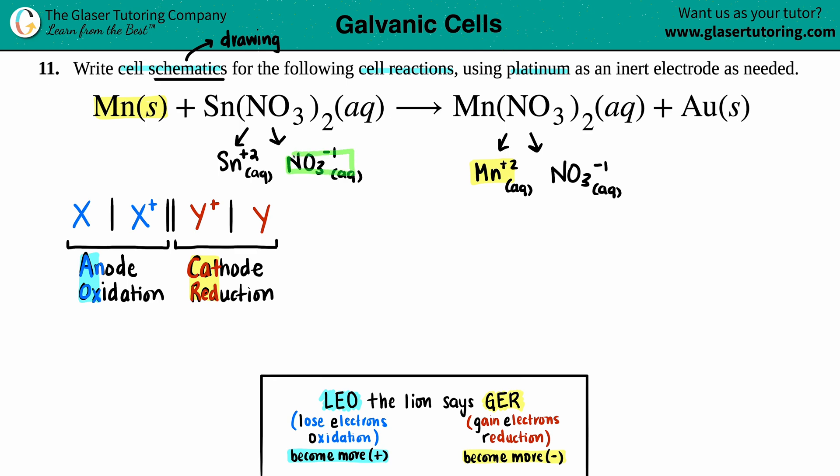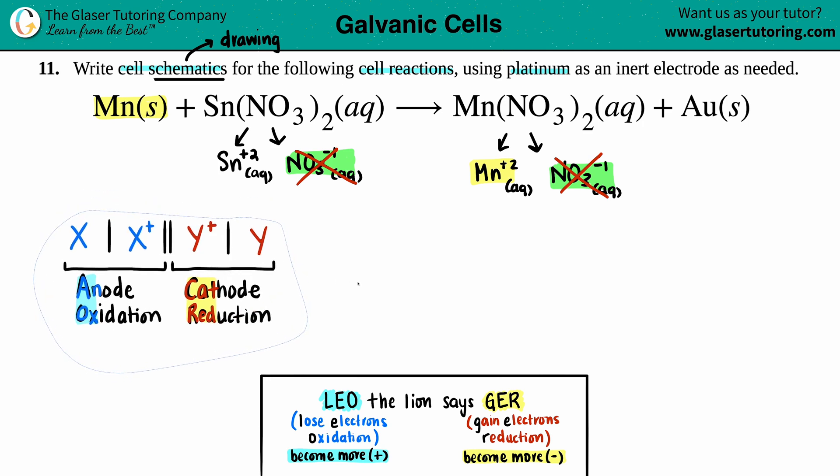If we look at the nitrate, NO3 negative one turned into NO3 negative one. There was no change here. It's literally the same, same charge, same number of oxygen, same number of nitrogens. There's absolutely no change here. So bye-bye. Nobody cares. With these cell schematics, we do not care about spectator ions, ions that do not change in oxidation charge.